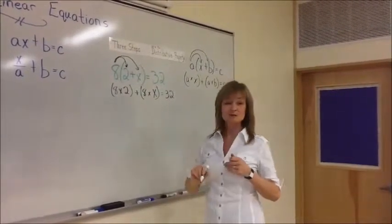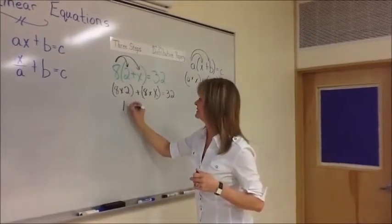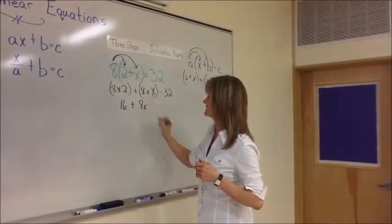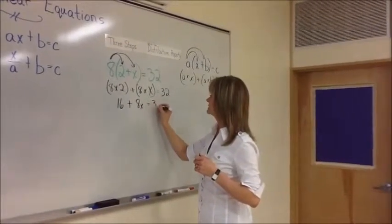So eight times two, use your calculator if you need to, is 16, plus eight times X, we can rewrite just as 8X, equals 32.